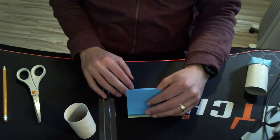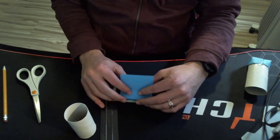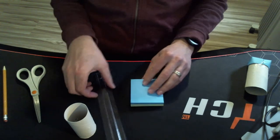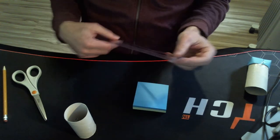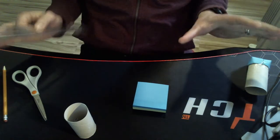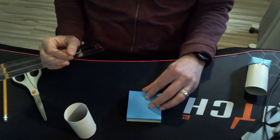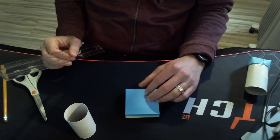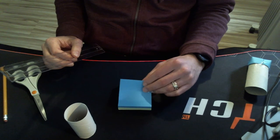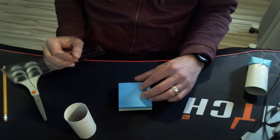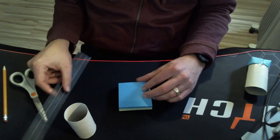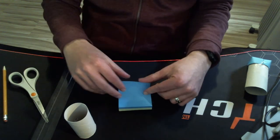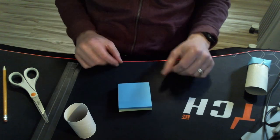The thicker the paper, the better, and if you have black construction paper or something, that would work out really well. Now these post-it notes are about three inches by three inches, so if you do have paper instead of post-it notes, you'll want to cut a square piece of paper that's three inches by three inches. If you're using normal white paper, you'll want a few layers. So maybe fold it first to get two layers, and then cut a three by three piece with the fold on one of the edges.